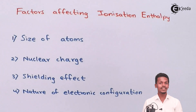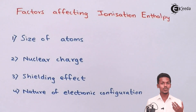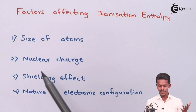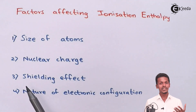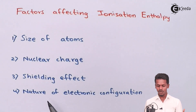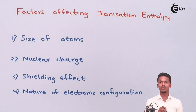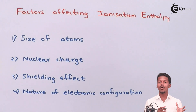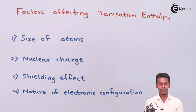So these are the factors that will affect the ionization enthalpy: size of atom, nuclear charge, shielding effect, and nature of the electronic configuration. Let us discuss each of them one by one and how each affects the ionization enthalpy.